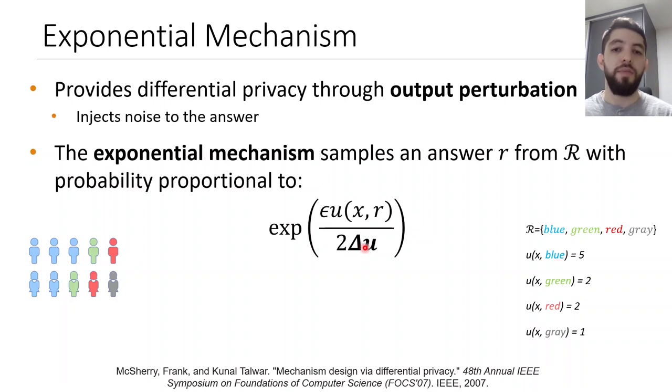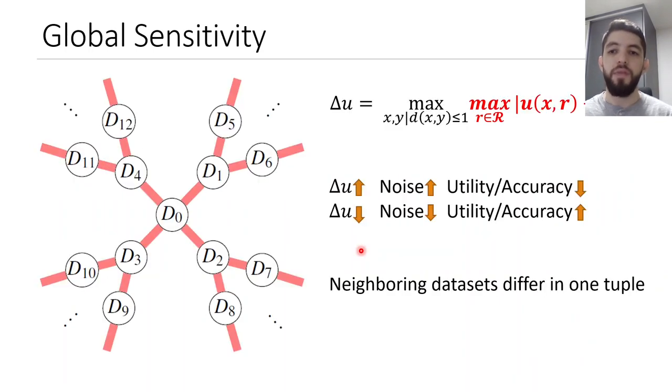Let's talk more about the global sensitivity. The global sensitivity measures the maximum difference of utility scores between every pair of neighboring databases. So the larger the global sensitivity, the more noise we add, and the less utility and accuracy we have, and the opposite is also true.